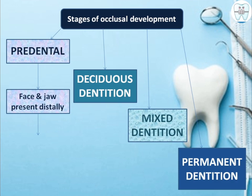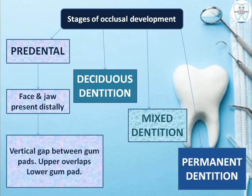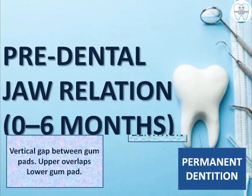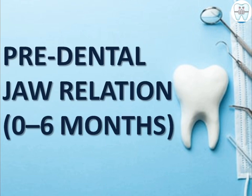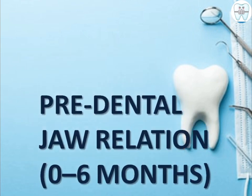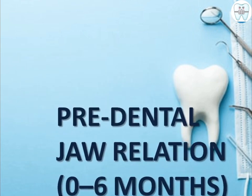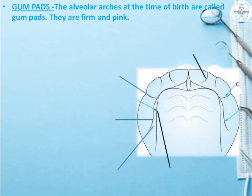In the pre-dental period, the face and jaws are present distally. There is a vertical gap between the gum pads, and the upper gum pad completely overlaps the lower gum pad. The pre-dental jaw relation covers zero to six months.